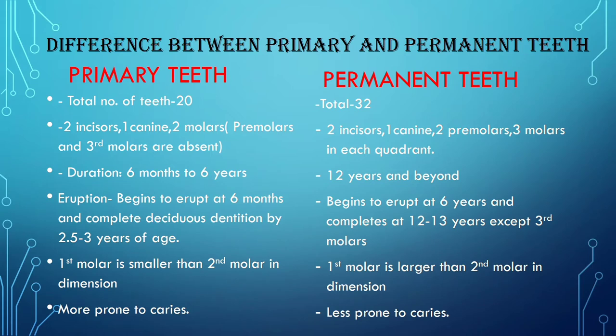In primary teeth, there are two incisors, one canine, and two molars per quadrant. Premolars and third molars are absent. In permanent dentition, there are two incisors, one canine, two premolars, and three molars in each quadrant. Duration of primary dentition can be six months to six years, while permanent dentition is 12 years and beyond.